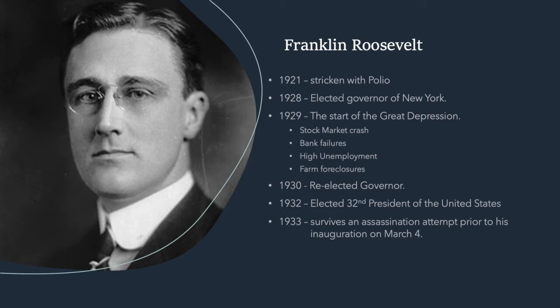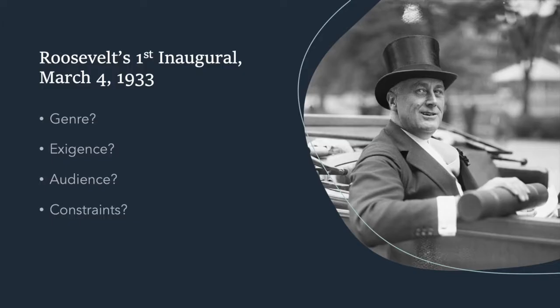In 1932 he was elected the 32nd president of the United States. The election took place in November of 1932 and the inauguration would be on the 4th of March. But while he was visiting Miami between the time of his election and his inauguration, he survived an assassination attempt. Our task today is to examine Roosevelt's first inaugural address, the first of four. He was the only president to be elected and to serve four terms as president of the United States.